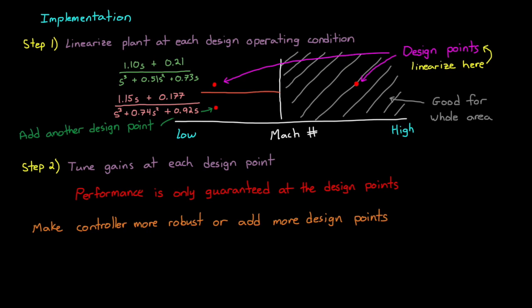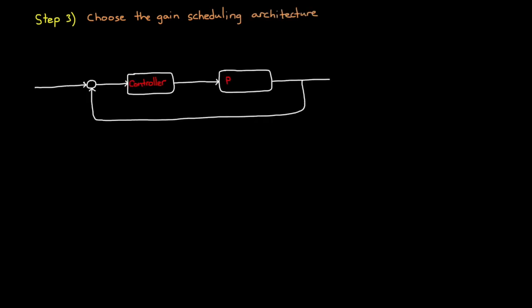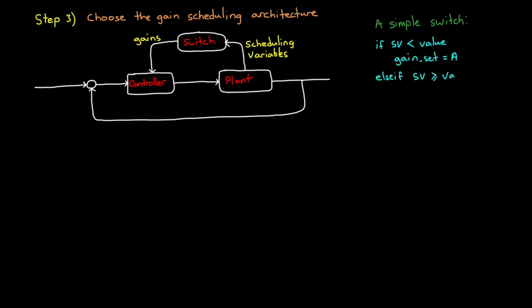At this point, we have a handful of design operating points and their associated gain sets, and so the fun part begins. Step three is to implement an architecture that switches between those gain sets based on the scheduling variables. A dead simple approach here would be to just implement a simple switch. If the scheduling variable is less than some value, use gain set A. If it's greater or equal to that value, then use gain set B. This is an attractive architecture because of how simple it is to think about and implement. However, it produces some unintended transients when the switch occurs.